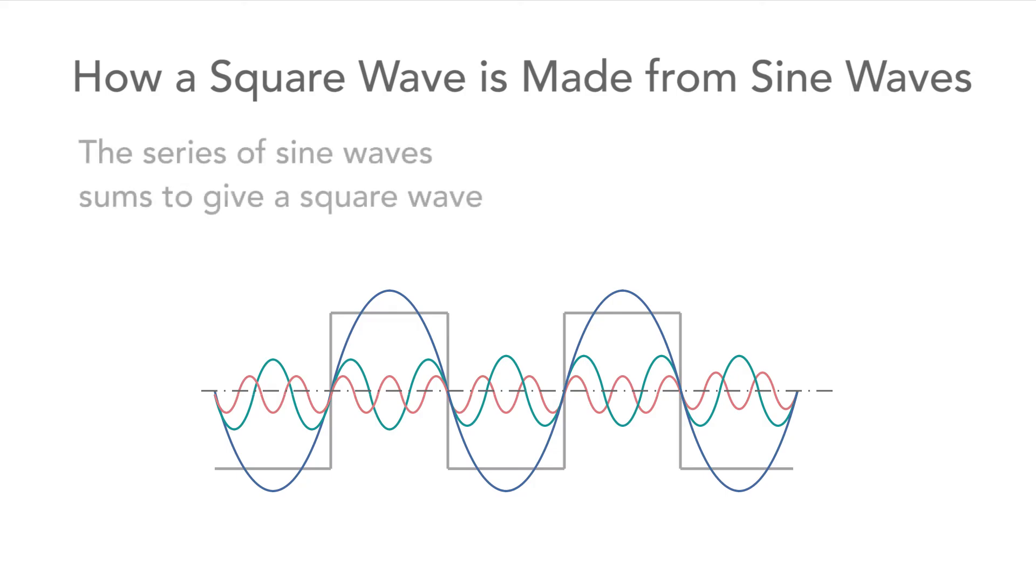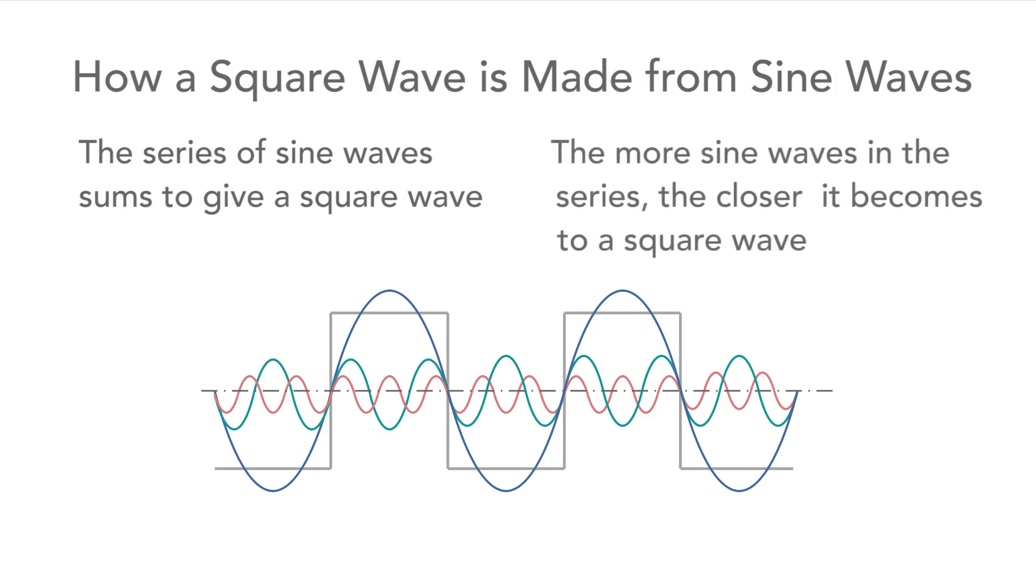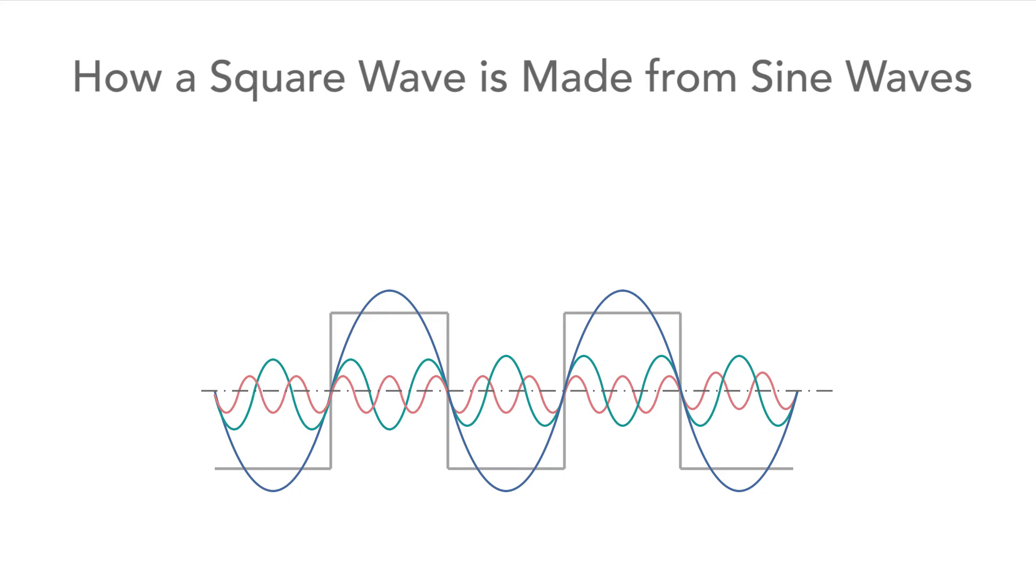When all these components are added together they sum to give the square wave. The more sine waves in the series, the closer to an actual square wave it becomes. This can be expressed mathematically with a series of sine waves of different harmonics and different amplitudes.